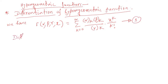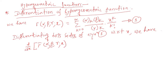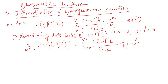Differentiating both sides of equation 1 with respect to x, we have d/dx F(α, β; γ; x) equal to summation k equal to 0 to infinity of (α)_k (β)_k over (γ)_k times 1 over k factorial times d/dx of x to the power k.